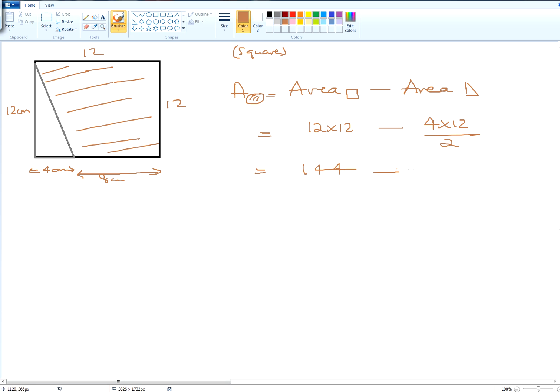12 times 12 gives you 144, and 4 times 12 divided by 2 gives you 24. Well done! 144 minus 24 gives you 120, so the area of the shaded shape is equal to 120 square centimeters.